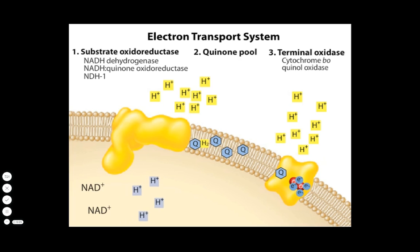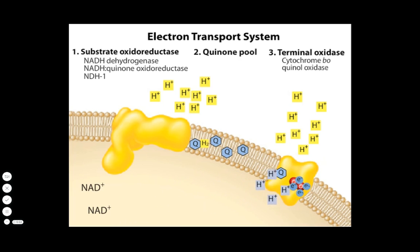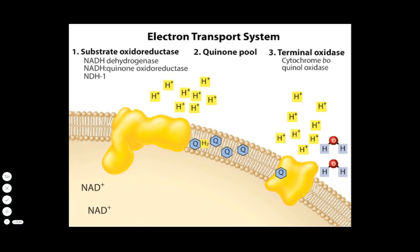Four protons from the cytoplasm join the electrons and oxygen to produce two molecules of water. In this way, oxygen — which has the strongest affinity for electrons of any other component of the electron transport system — is the final electron acceptor.